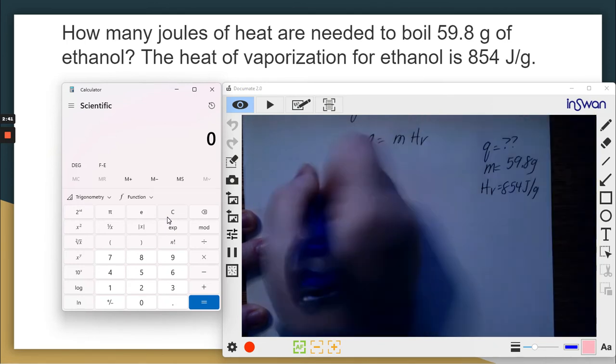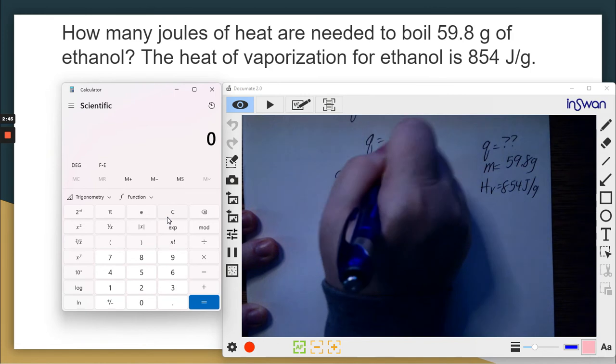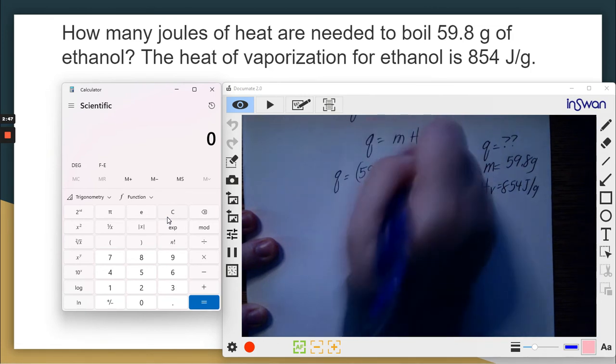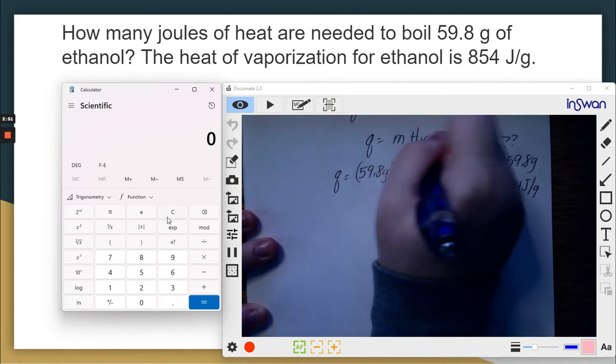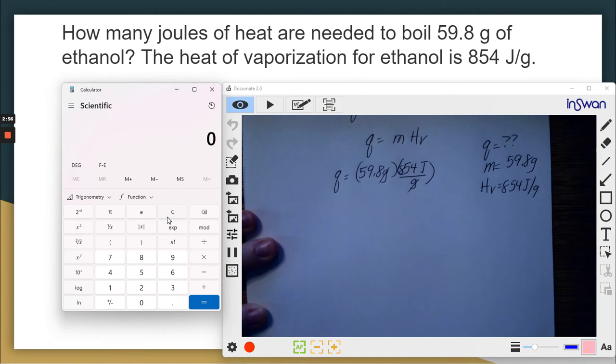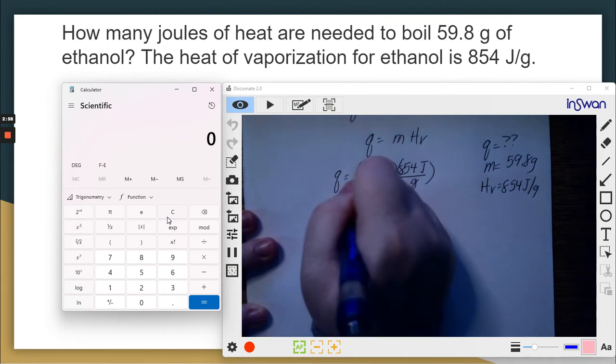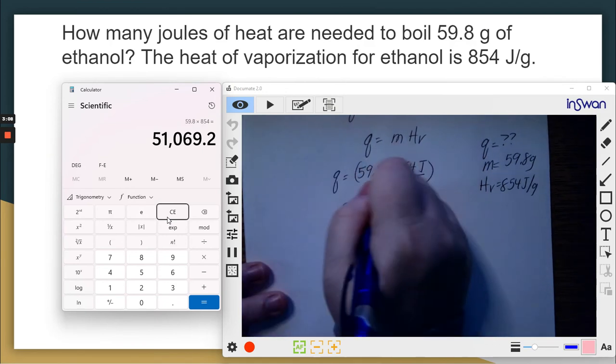59.8 grams. Remember, when it's joules per gram, 854 joules, the per means it's underneath, which allowed me to cross out grams left with joules. Last step is to do the math. 59.8 times 854 is 51,069.2 joules.